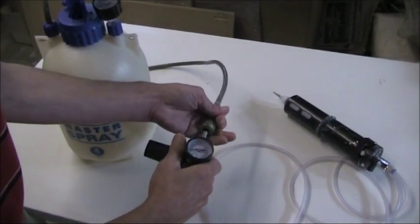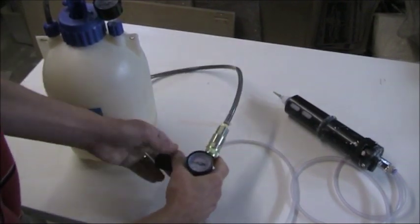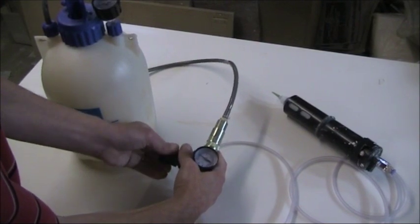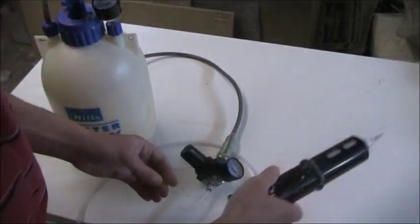You can see there's a dial or gauge on top of the container, and then again I use a controller to control the pressure going through to the glue gun or the paste gun.